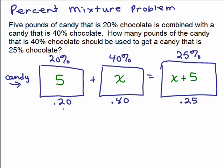What we're interested in is how much pure chocolate is in each of these bags. So the pure chocolate in this first bag would be 20% of 5, which is 0.2 times 5. We're going to mix it with this other bag, and I want to know how much pure chocolate is in there. That's 40% of x, so 0.40 times x.